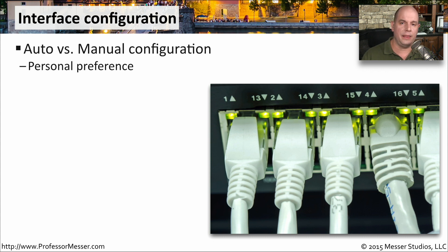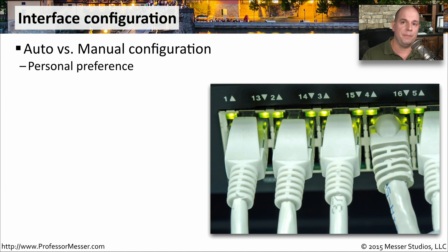One setting is automatic or manual configuration of the interface itself. Instead of manually setting speed and duplex, you can have the card automatically check what type of network it's connected to and set its speed and duplex based on that information. Most of the time this process works perfectly — you plug in and it automatically finds the speed and duplex, and everything works exactly as it should.